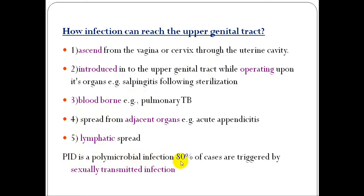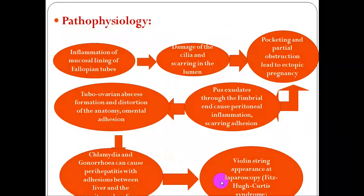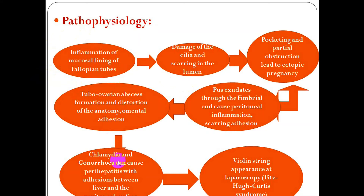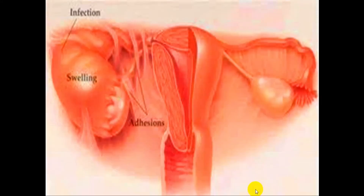PID is a polymicrobial infection — 80% of cases are triggered by sexually transmitted infection. Pathophysiology: inflammation of the mucosal lining of the fallopian tube leads to damage of the cilia lining in the lumen, and pocketing and partial obstruction lead to ectopic pregnancy. Another complication is post-ovulatory damage to the fimbriae, leading to peritoneal inflammation and scarring adhesion. Chlamydia and gonorrhea can cause perihepatitis, known as Fitz-Hugh-Curtis syndrome, visible at laparoscopy.